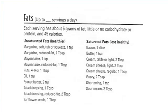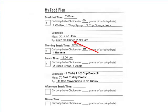For fats, each serving has five grams, which is why we divided our gram amounts by five. For breakfast I had four fat choices: two teaspoons of butter — each teaspoon is one choice — and two ounces of ham, which also counts as two fat choices. So two teaspoons of butter plus two ounces of ham gives us our four fat choices for breakfast.